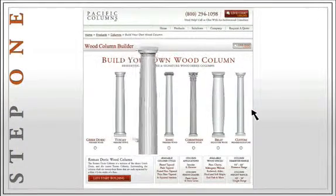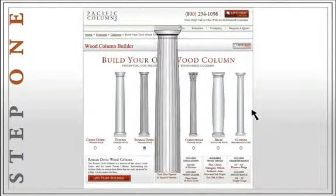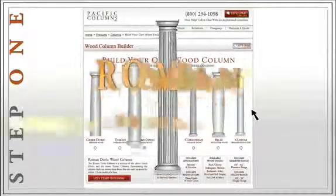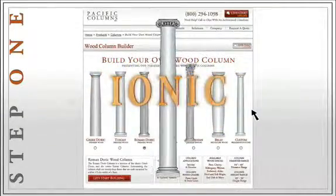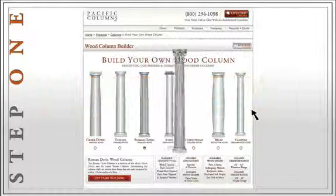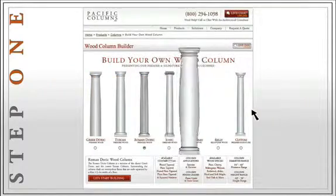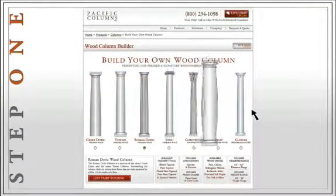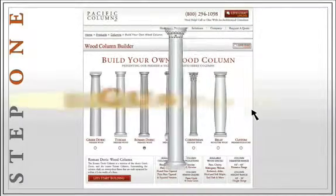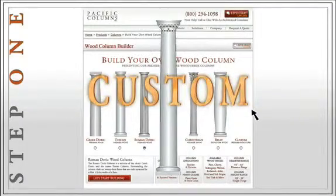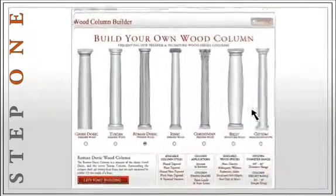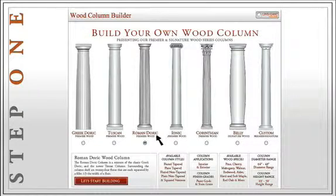The column builder includes all our premier column styles: the Greek Doric, Tuscan, Roman Doric, Ionic, Corinthian, the signature series belly column, and you also have the option to design your own column with your own style and proportions. In this tutorial, we will select a Roman Doric column, which is a mixture of the classic Greek Doric and the newer Tuscan column.